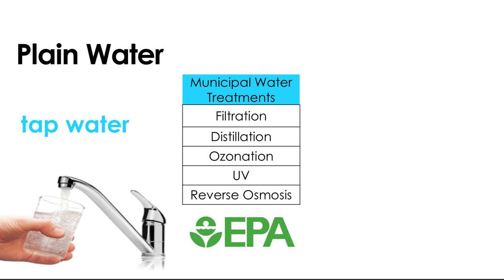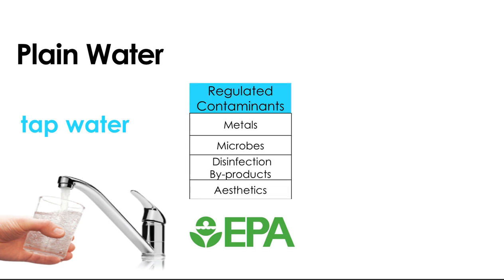Municipal water is usually treated using more than one method. Historically plants would use filtration, distillation (boiling, vaporizing, condensing back to liquid), ozonation using gases, or UV light — methods that destroy microorganisms and remove chunks like stones, rocks, and dirt from natural ground water sources. Tap water is collected at treatment facilities from natural sources, treated, and regulated by the EPA for treatment methods and contaminant levels.